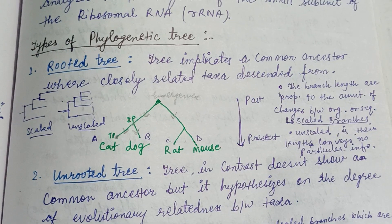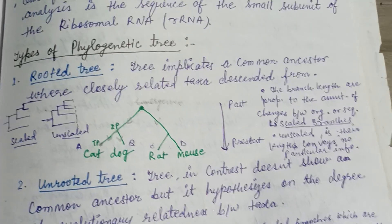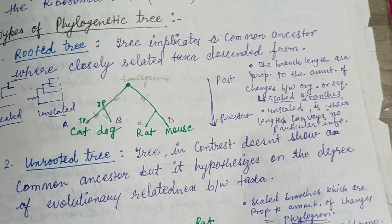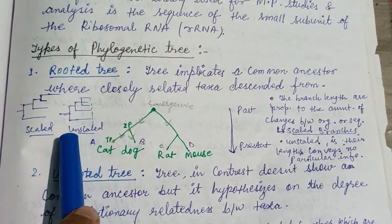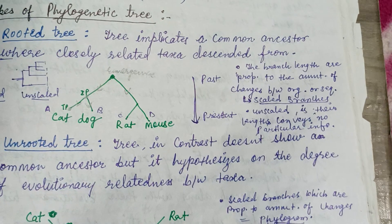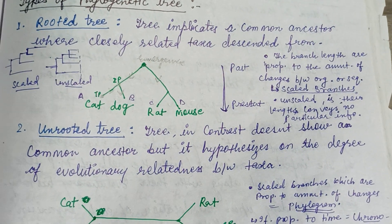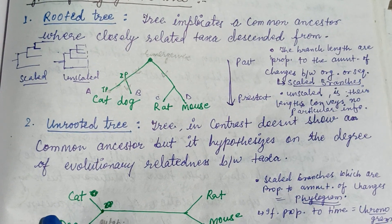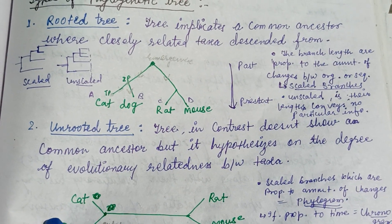Regarding types of the phylogenetic tree, a phylogenetic tree can be drawn either scaled or unscaled. The scaled branches have branch lengths that are proportional to the amount of changes between organisms or sequences, while in unscaled branches their length conveys no particular information.